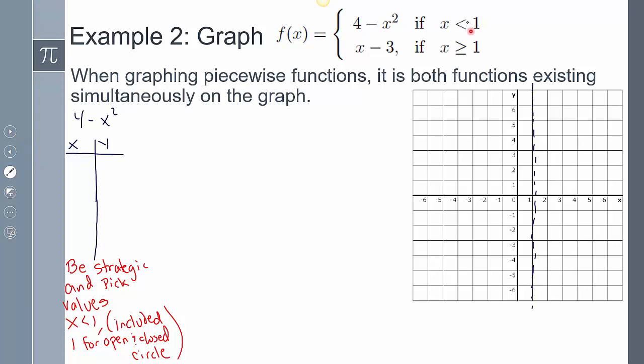We still have to include this open and closed circle notation. So I also want to use 1 as a point, but that's going to represent an open circle on the line. Notice I pick 1 and then values that are smaller than that: 0, negative 1, and negative 2.